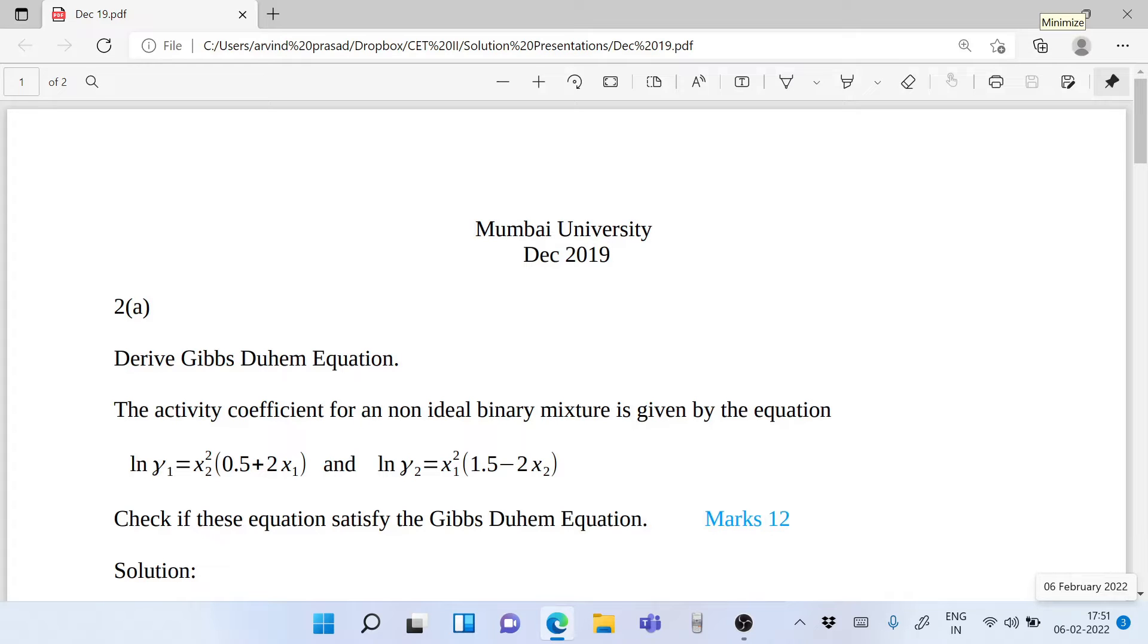Hello friends and welcome to another lecture on chemical engineering thermodynamics. Today we will look into a question from Mumbai University, December 2019. The question is 2a: Derive the Gibbs-Duhem equation. The activity coefficient for a non-ideal binary mixture is given by ln gamma 1 equals x2 square 0.5 plus 2x1 and ln gamma 2 equals x1 square 1.5 minus 2x2. Check if these equations satisfy the Gibbs-Duhem equation.